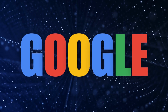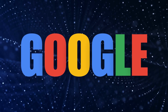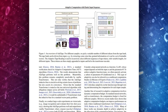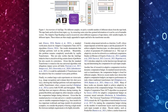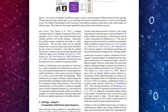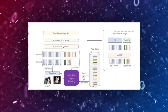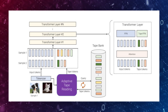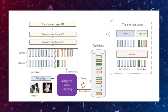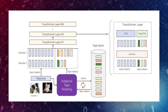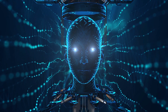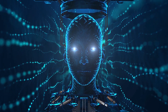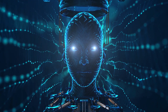Google has introduced its latest AI innovation, Adatape. It's a revolutionary model that utilizes adaptive computation. This transformer-based architecture uses a dynamic set of tokens to create elastic input sequences, offering a fresh perspective on adaptivity that surpasses previous models.